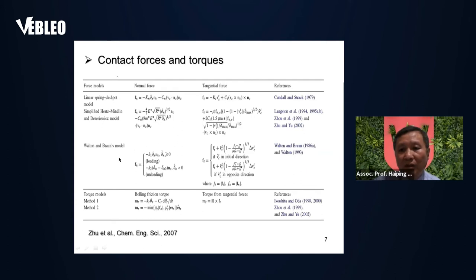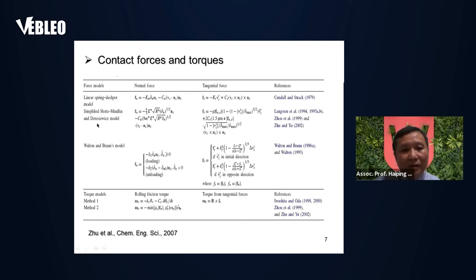Some people use a linear model, others use a non-linear model. Based on our experience, for most cases when we use these models we can find similar results for the simulation of a particulate system. It is only for some special cases — for example, if we consider just one or two particles — that we can find a difference between the different models.